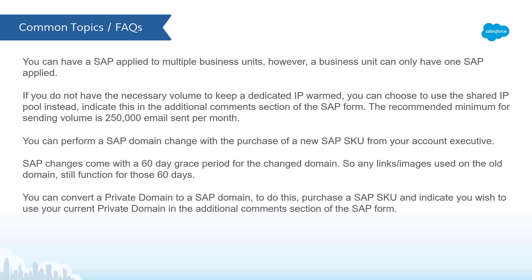You can convert a previous private domain setup to a SAP setup. To do this, purchase the SAP SKU from your account executive and indicate that you want to use your current private domain for the SAP setup in the additional comment section of the form.